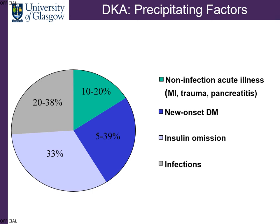In terms of precipitating factors, there are three main areas. Infections such as pneumonias, skin infections, and urinary tract infections. Omission of insulin — for whatever reason a patient with type 1 diabetes is not taking or has not taken their insulin. New onset diabetes — newly presenting patients with type 1 diabetes. And in a small minority, patients who present with a non-infection acute illness such as myocardial infarction, severe trauma like a road traffic accident, or pancreatitis, where the pancreas becomes inflamed. Although this patient may not be a type 1 diabetic, because the pancreas stops making insulin transiently, you get all the features of somebody like a newly presenting type 1 diabetic.